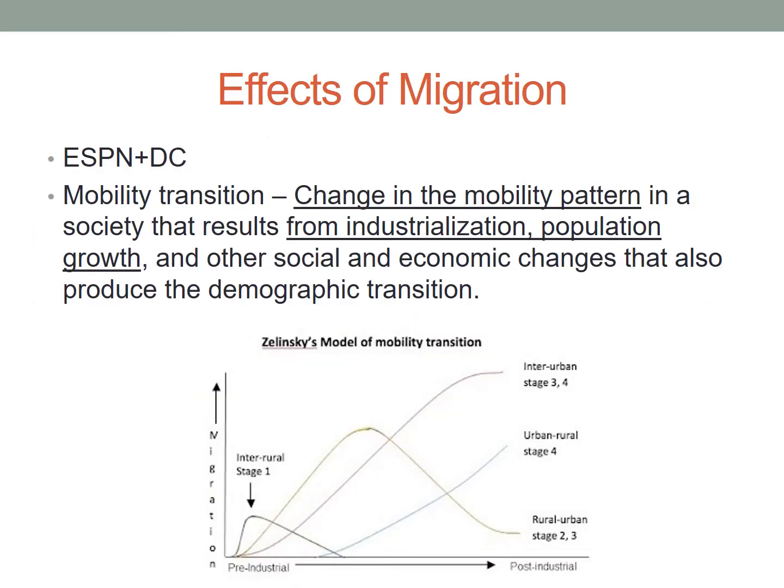Migration can change the age and sex composition of a country as well. Retirees in the United States continue to move to sunbelt states like Arizona and Florida. International migrants traditionally have skewed toward males, thus impacting the sex ratio. But since most international migrants tend to be in their working age, migration can also help to lower the dependency ratio in the destination country.